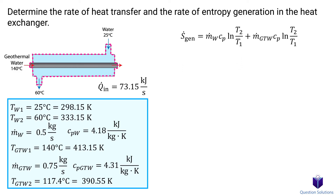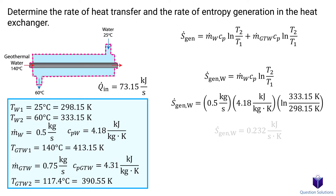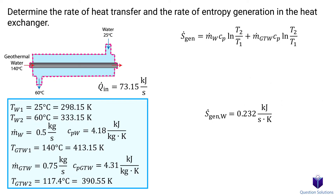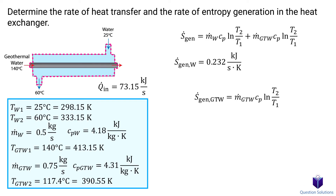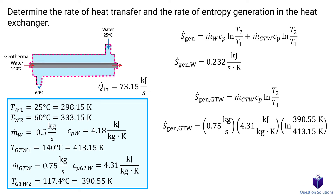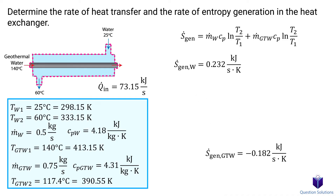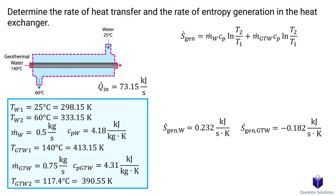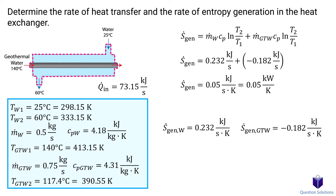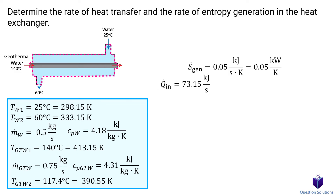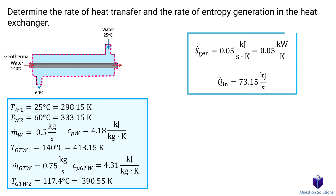We tackle each fluid separately and then add together. For the water, we plug in the values and solve. Then for the geothermal water, remembering to use the final temperature of 117.4°C we found earlier, we solve. The total entropy generated is the sum of these two values, which is also equal to kW/K — and those are our answers.